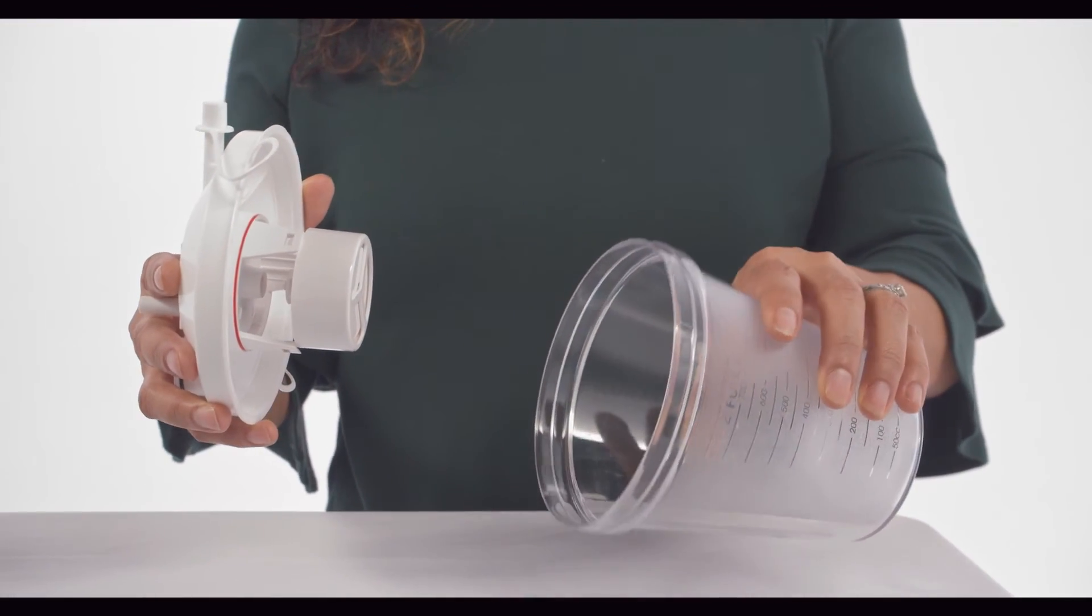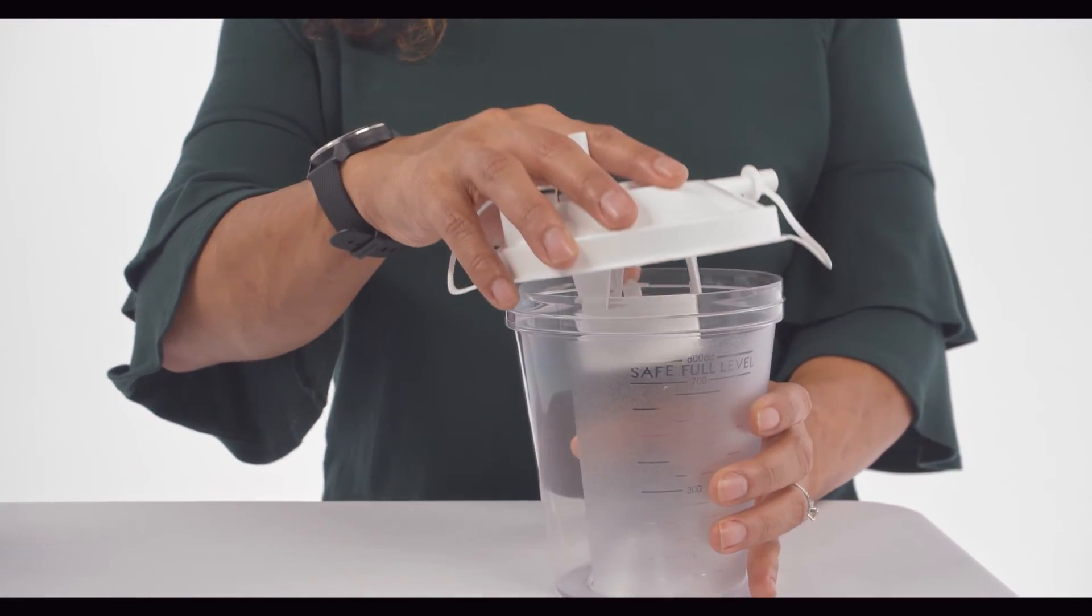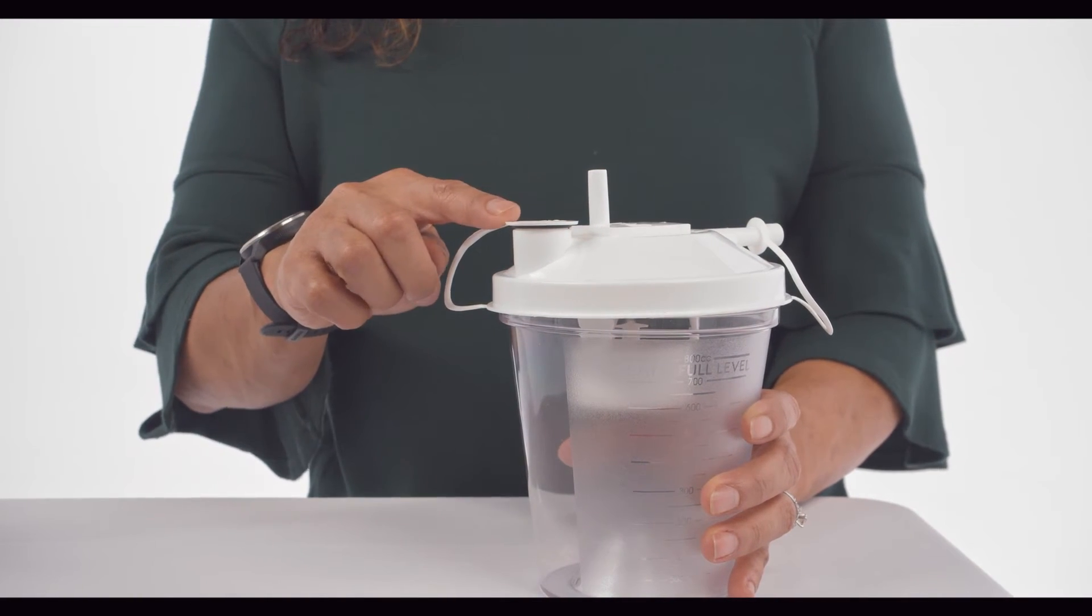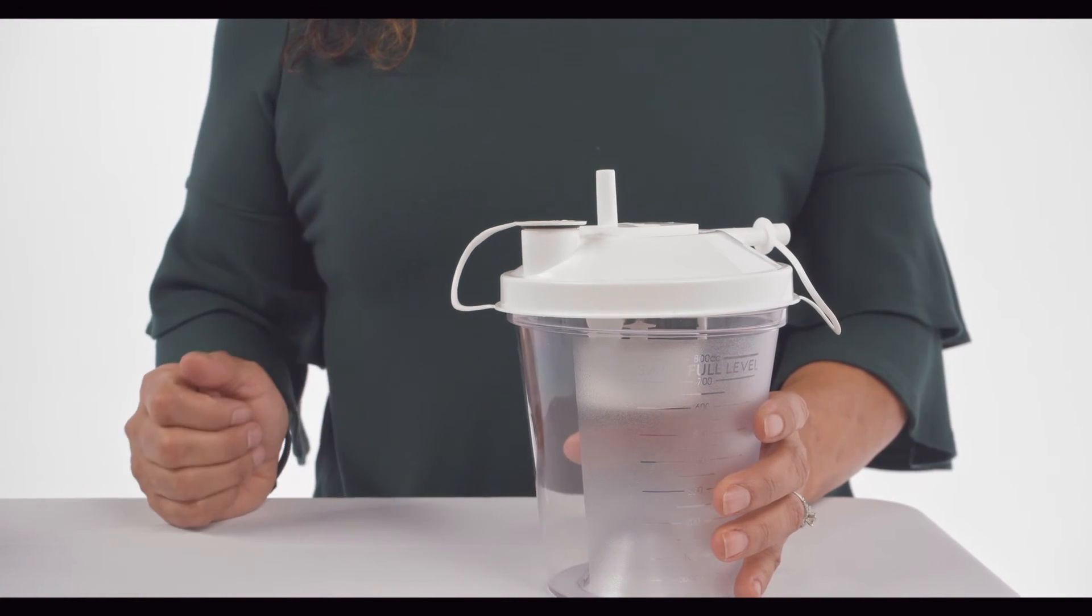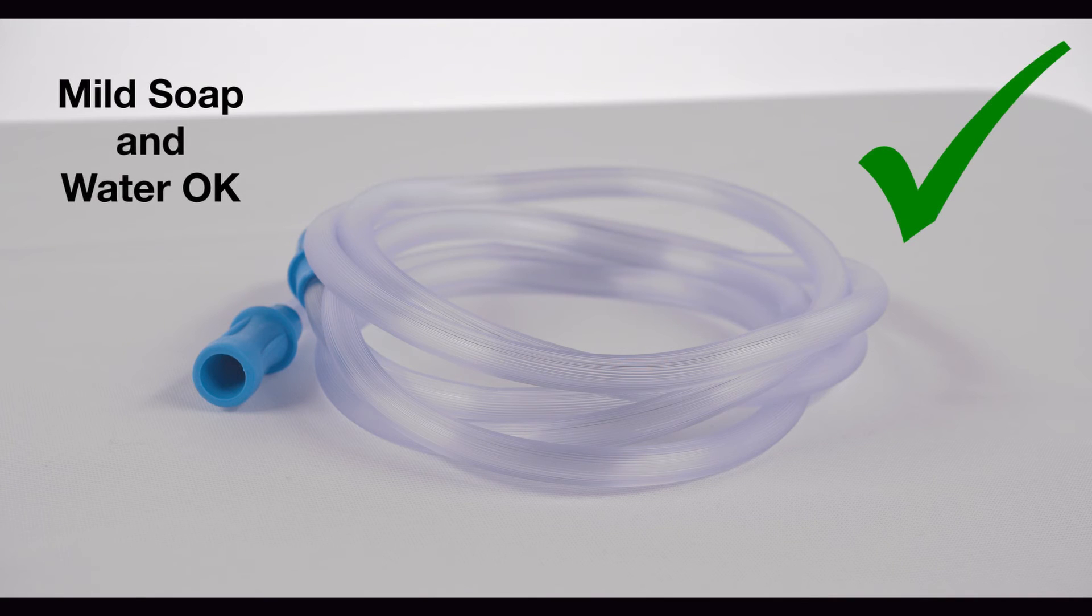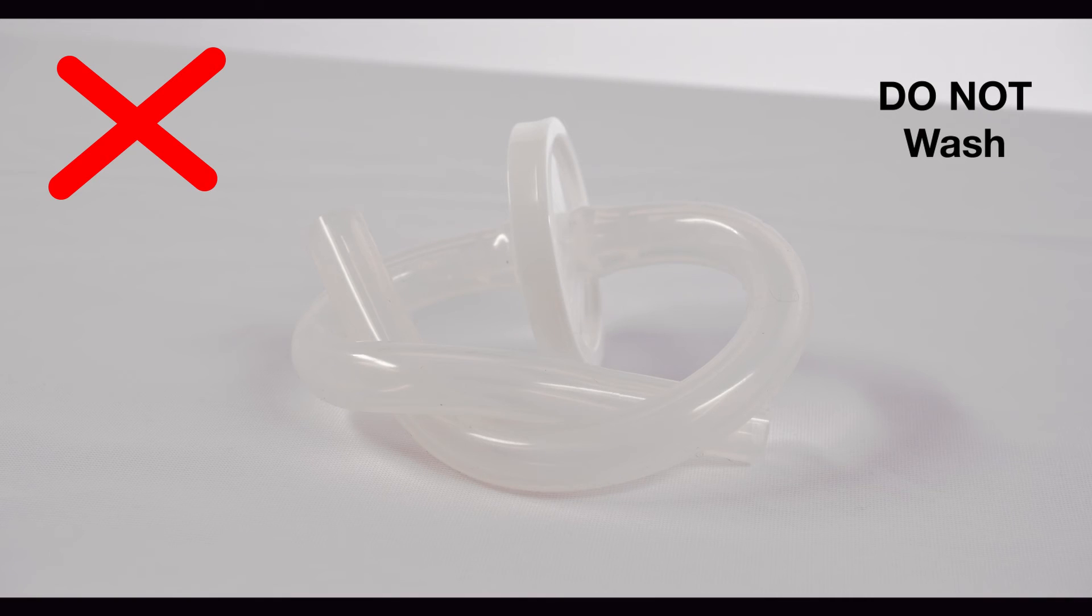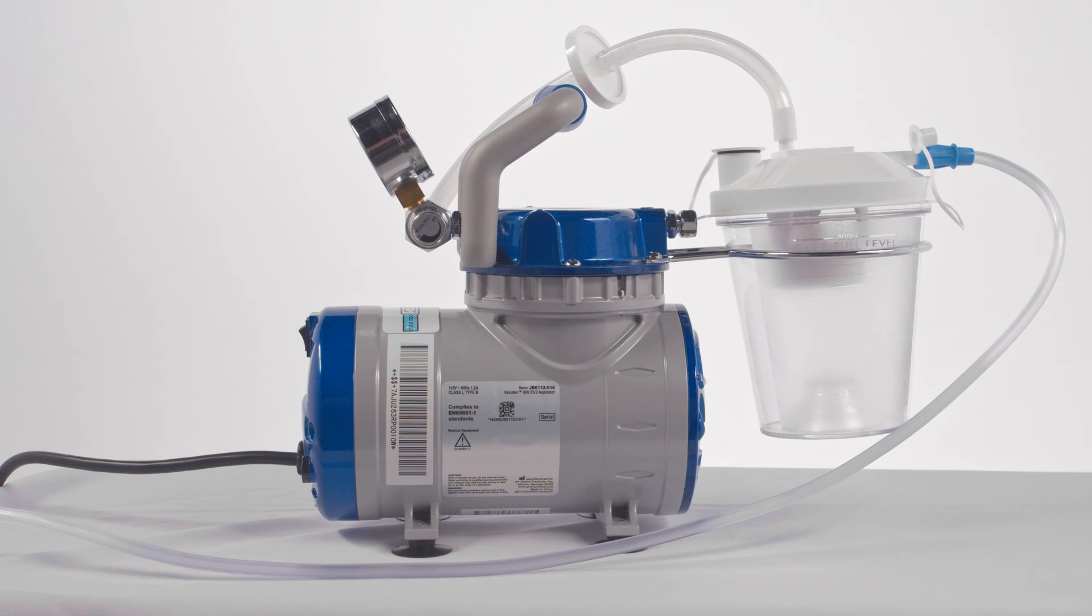Make sure to properly empty the collection bottle by removing the entire lid and not pouring secretions out of the hole at the top. Wash the bottle with mild soap and water. Your patient suction tubing can also be washed with mild soap and water. The unit tubing with HEPA filter should not be washed. Always follow the guidelines and instructions provided by your healthcare professional.